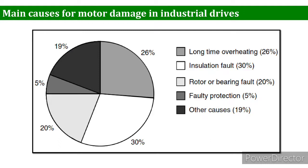Next, we look at the protective functions needed to detect motor drive faults. This important data was collected by the ABB Group, a major name in motor protection. From the graph, there are five main divisions: long-time over-rating at 26 percent, insulation fault at 30 percent, rotor or bearing fault at 20 percent, faulty protection, and miscellaneous or other causes.